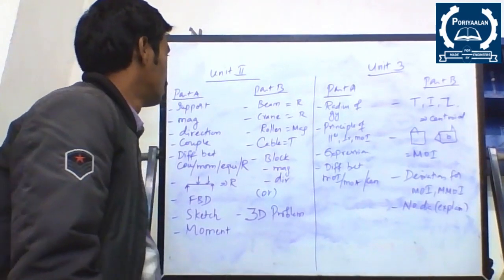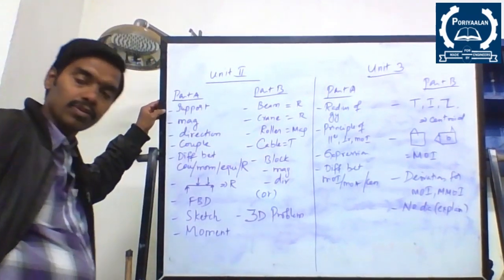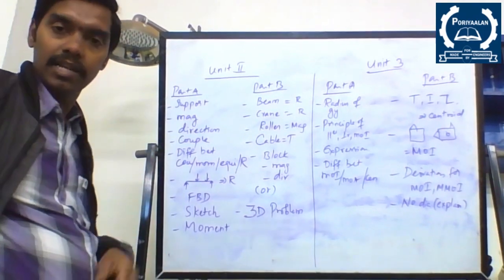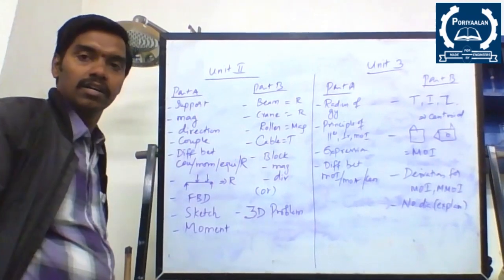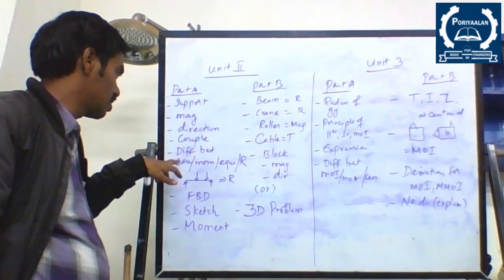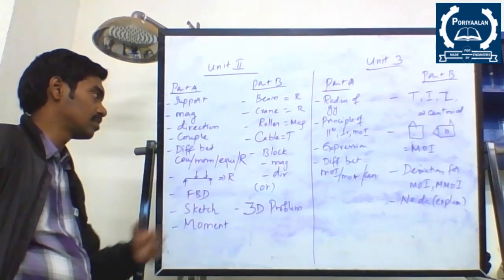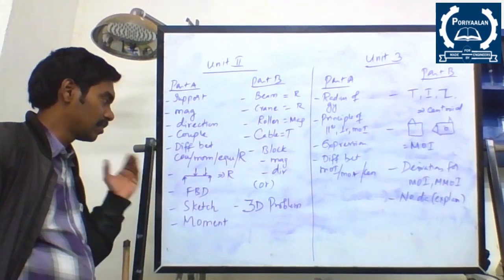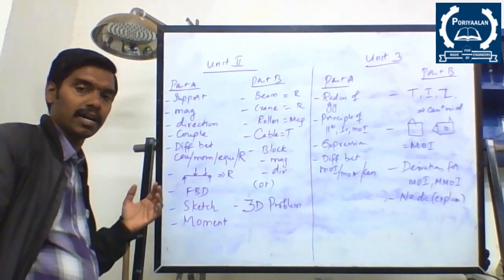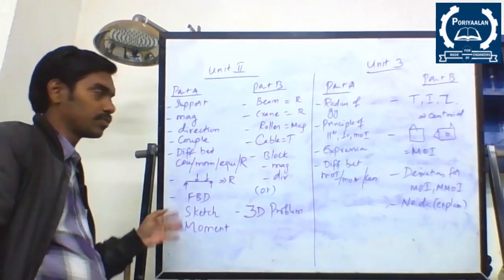Now we are going to see about Unit 2. In Unit 2, what are the important Part A repeated questions? Simply they will ask: what is a support, what are the types of support available, or sometimes ask you to draw a sketch for a corresponding support. The next question involves simple diagrams where they ask you to find the magnitude and direction of a couple. Sometimes they will ask you to define couple or types of couples available. Next is the difference between couple and moment, or couple and equilibrium. Sometimes they will give simple diagrams and ask you to find the resultant force for corresponding beams, or give a sketch and ask you to find the free body diagram. The last one is moment — state or define moment, types of moment available.